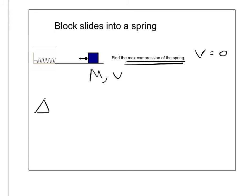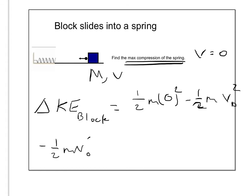So the change in kinetic energy of the block is going to be 1 half m v final, which is zero, minus 1 half m v initial. So simplifying that, that's just negative 1 half m v not squared.